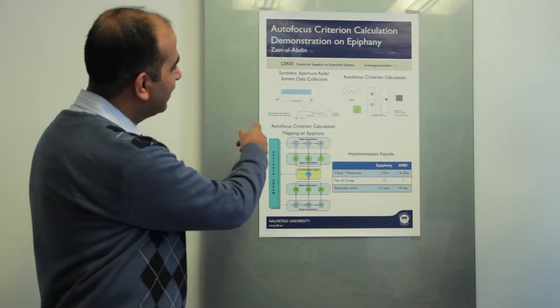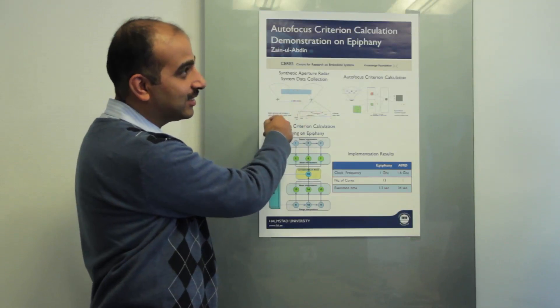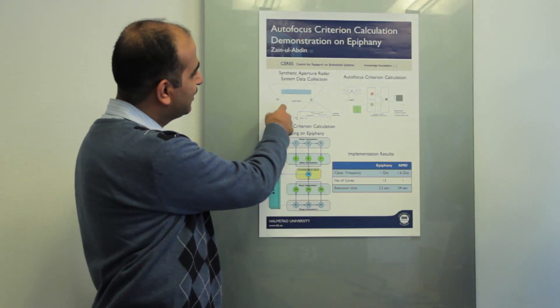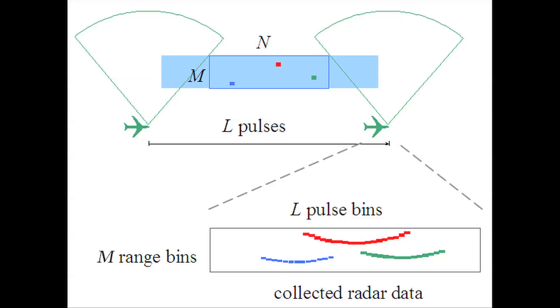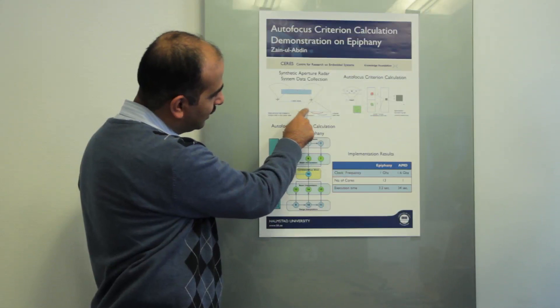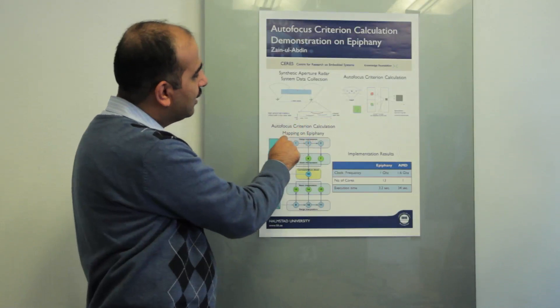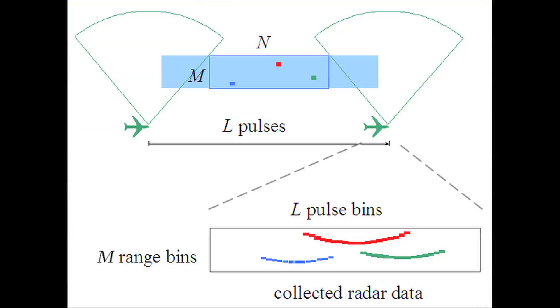Here is an illustration of the synthetic aperture radar system data collection. Usually the flight goes along a linear path, and then it sends pulses along the direction and gets the received pulses along these curved paths. The idea is that you integrate along these curved paths to draw high-resolution maps from the image data.